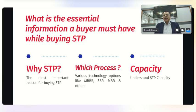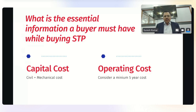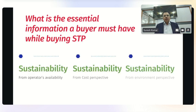The third thing to consider is STP capacity — something very simple but many times builders are not able to arrive at the right figure. They also need to know the total cost of owning an STP: not just the buying cost but also the operating cost. The builder must consider civil construction costs, mechanical equipment cost, and even the cost of land used for the process.